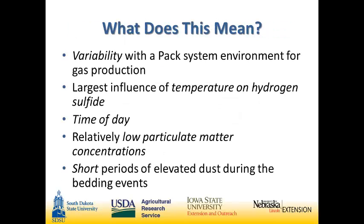So what does all this mean for the person working in the barn? We see variability in the PAC systems for gas production, particularly hydrogen sulfide — a bit more variability in PAC systems compared to scrape systems. Temperature had the largest influence on hydrogen sulfide, especially in PAC barns. We do see an active time of day, with peaks occurring around 7 to 8 in the morning and 7 to 8 at night. We have relatively low particulate matter concentrations in these barns, with the exception of short periods of elevated dust during bedding events, which do quickly return to lower concentrations.